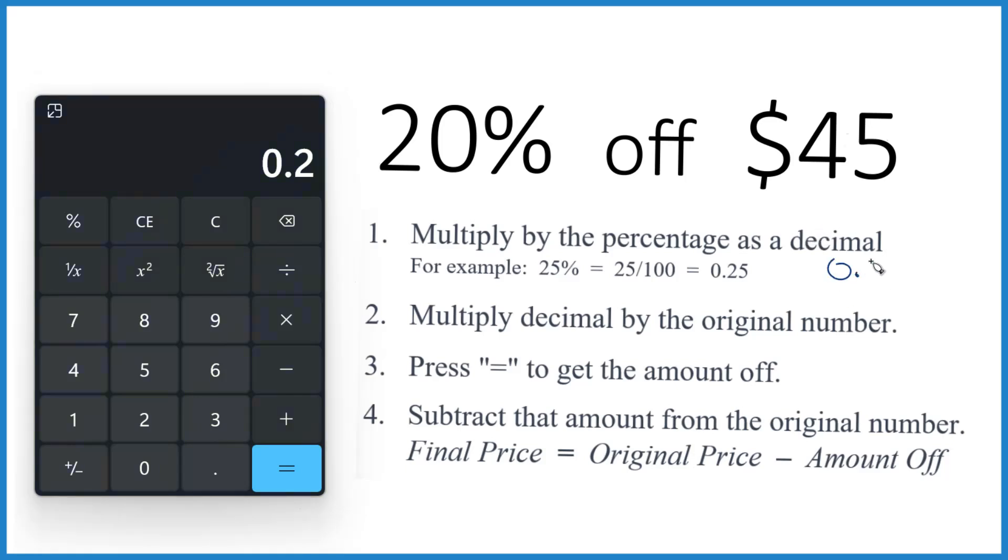So we have 0.2. That's our decimal. Now we multiply that by the original number. We take 0.2 times that $45 there. So times 45, that gives us 9.